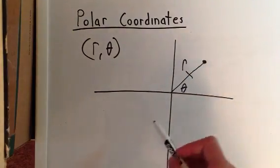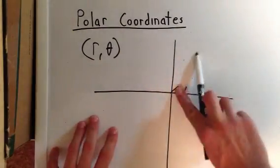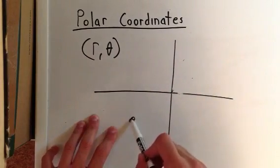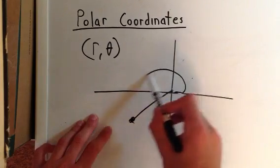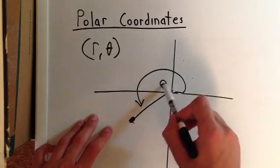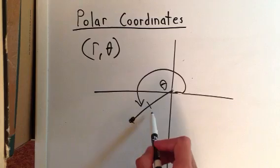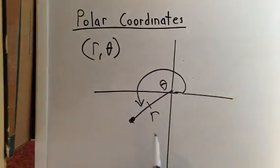So for example, if you had another point, let's say this point right here, your r would be the distance from the origin, your θ would be this whole angle right here. This would be your θ, and this is your r. It's a very simple concept.